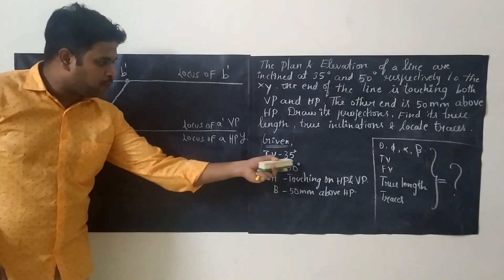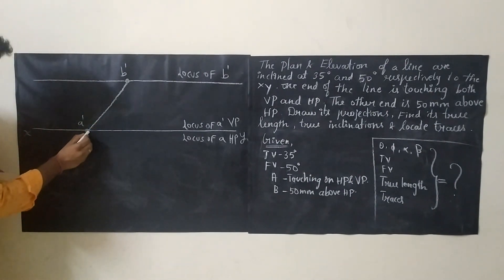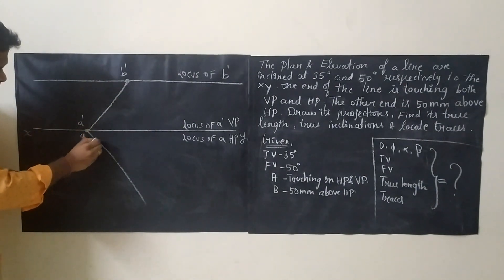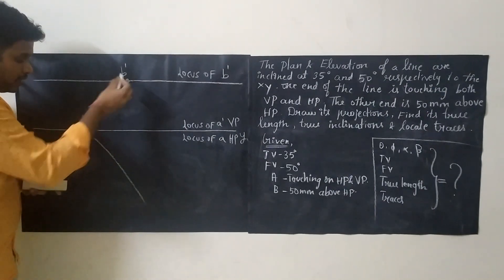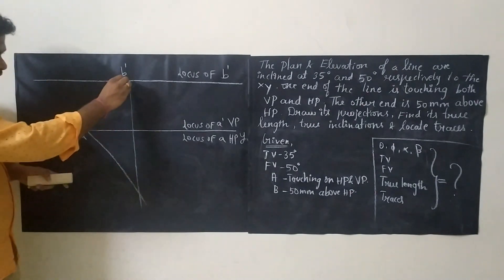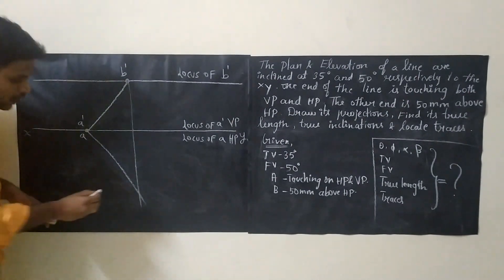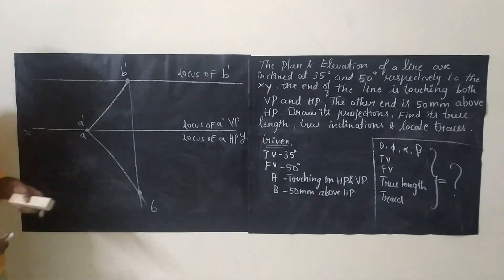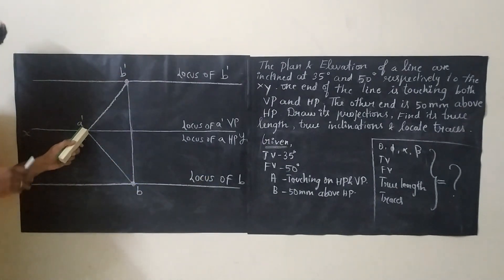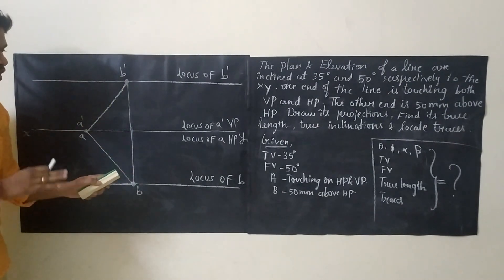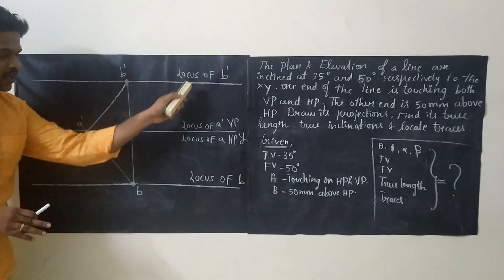The next hint is the top view angle of 35 degrees. Keep your protractor upside down at point A and draw a line at 35 degrees. Since B and B-dash will be lying on the same vertical line, extend B-dash vertically downward. This vertical line meets the 35-degree line at one point, and that point is called B. Now draw a straight horizontal line through B — this is the locus of B. We now have four loci: locus of A-dash and A on the reference line, locus of B-dash, and locus of B.